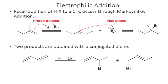We explain that by looking at the mechanism for the reaction. In electrophilic addition, the hydrogen is electrophilic, so it gets stolen by the pi bond. We can either put the hydrogen here, giving a carbocation in a primary position, or here, giving the carbocation in a more substituted position. More substituted carbocations are more stable, so that's why we get Markovnikov addition.